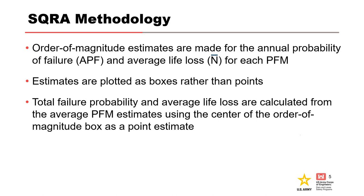For SQRAs, order of magnitude estimates are made for the annual probability of failure and average life loss for each potential failure mode. The order of magnitude estimates are plotted as boxes on the little fN chart. The total failure probability and average life loss are calculated from the average potential failure mode estimates using the center of the order of magnitude box as a point estimate.